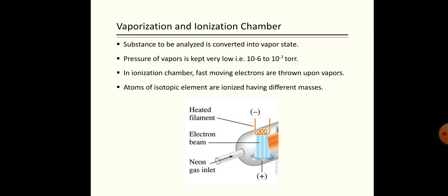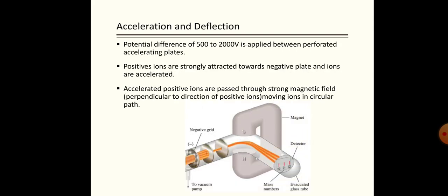After that, fast-moving electrons are thrown upon these vapors. These fast-moving electrons knock out electrons from isotopic elements and ions are generated. As you can see in the diagram, a heated filament converts the substance into vapor form. After vaporization, an electron beam is bombarded on the isotopes and they are converted into ions.